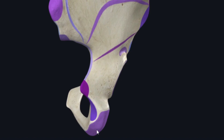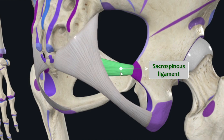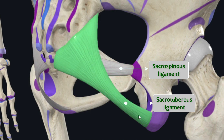The greater and lesser sciatic notches are converted into greater and lesser sciatic foramina by two ligaments running from the sacrum. The sacrospinous ligament runs from the sacrum to the ischial spine and converts the greater sciatic notch into the greater sciatic foramen. The sacrotuberous ligament runs from the sacrum to the ischial tuberosity and converts the lesser sciatic notch into the lesser sciatic foramen.